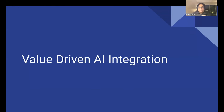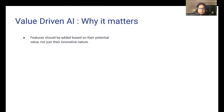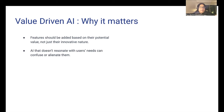Diving deeper into our presentation: the first topic, after defining what a product is, is to look at what value-driven AI integration means. An AI feature should be added based on its potential to solve a problem, and not just for its innovative nature. Don't just add an AI feature just because it's AI. Think of the use case it needs to solve and, based on that, decide the right feature. An AI feature that does not resonate with the user's need is going to be a flop.